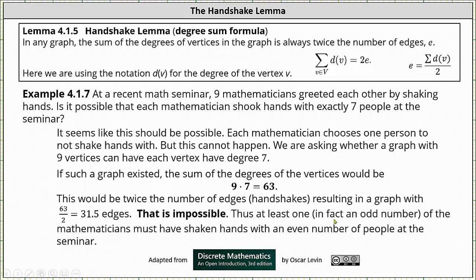Thus at least one, in fact an odd number, of the mathematicians must have shaken hands with an even number of people at the seminar. And this is because, as we know from the first example, the sum of the degree sequence must be even in order for the number of edges to be a whole number.